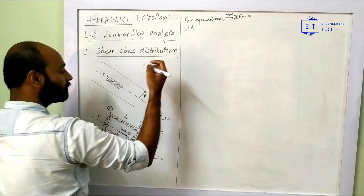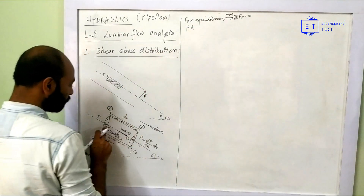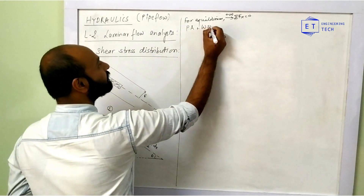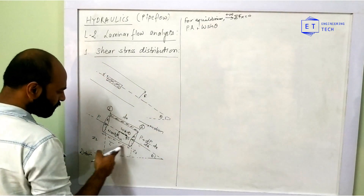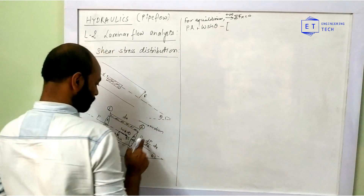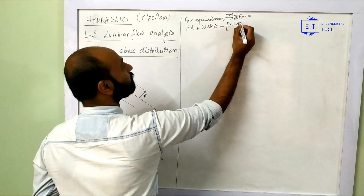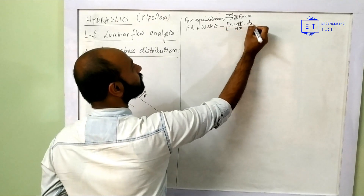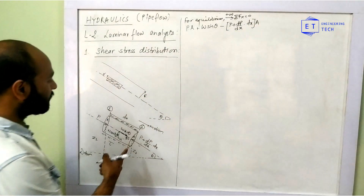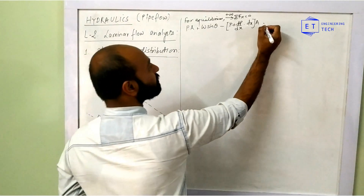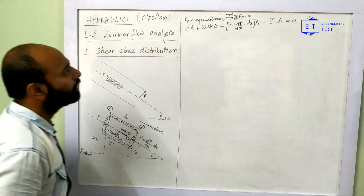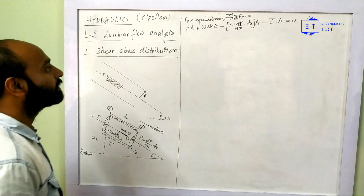The forces are: a positive pressure force, plus a component of weight W sin theta in the positive direction, minus the pressure force P plus (delta P / delta x) times dx times the cross-sectional area, minus the shear stress tau times the circumferential area AC — all equal to zero.